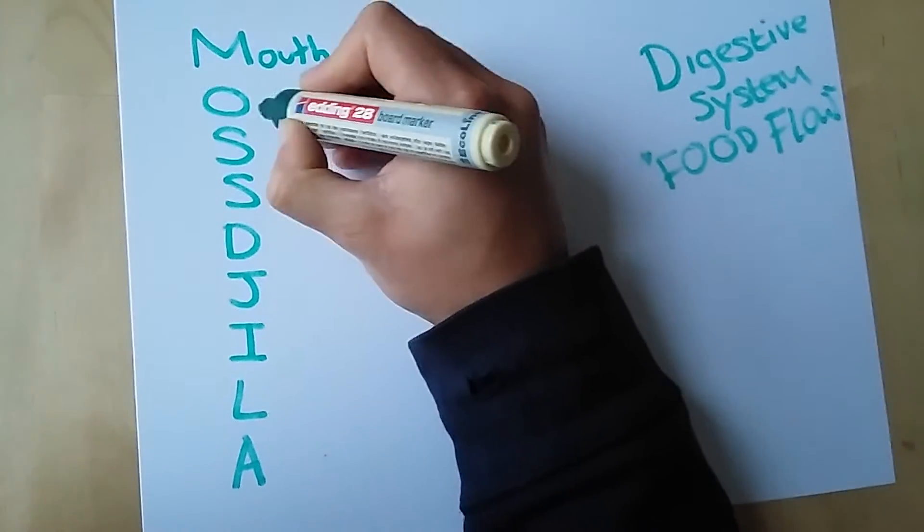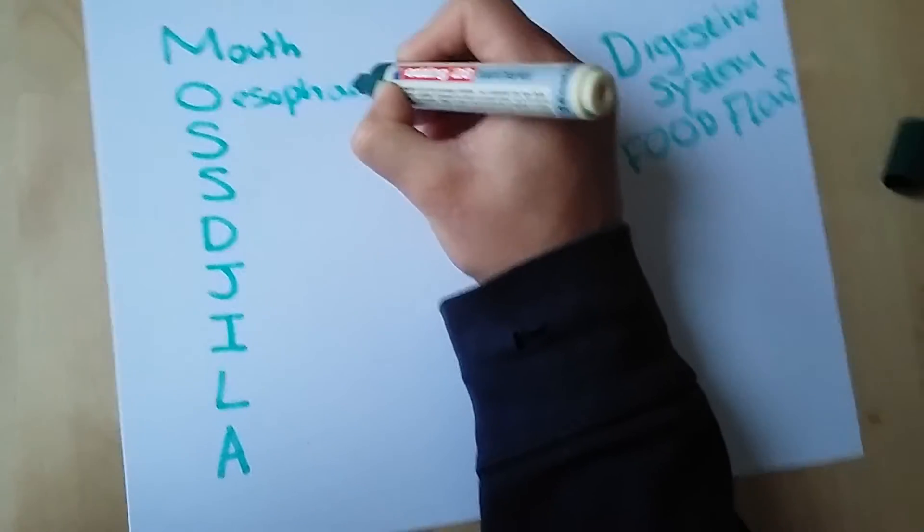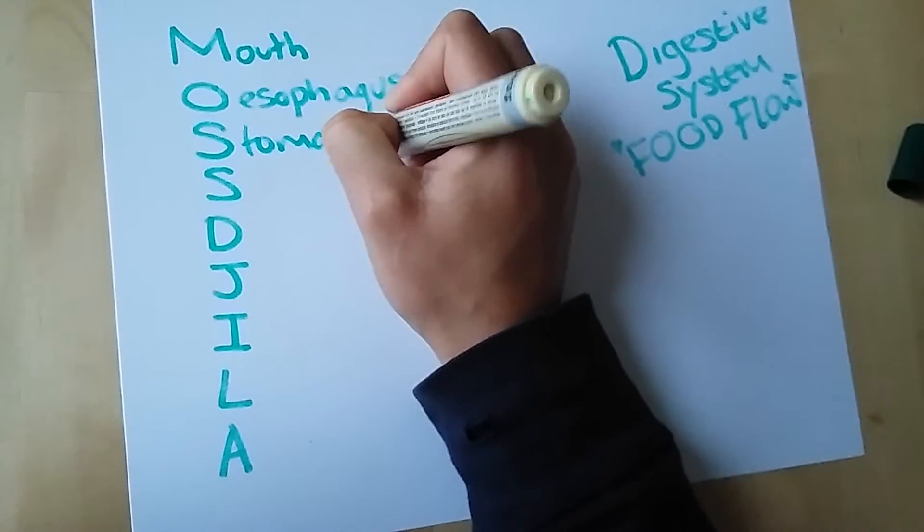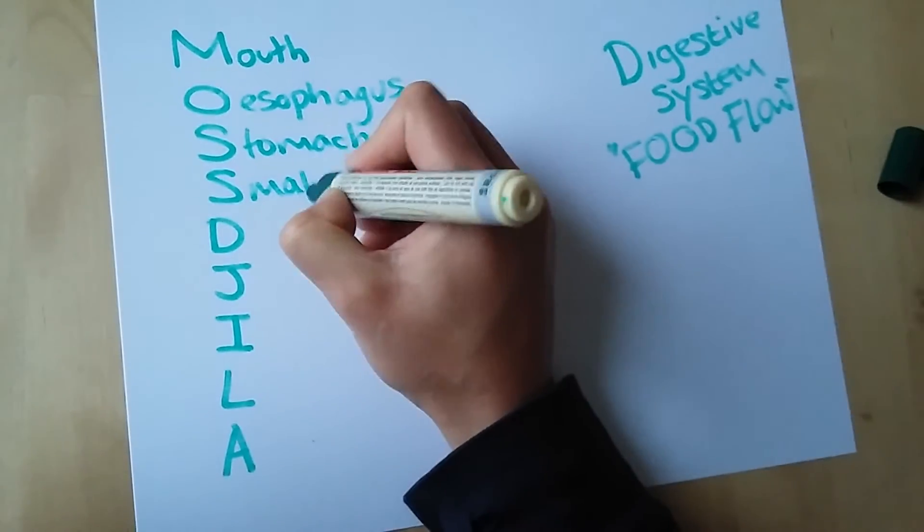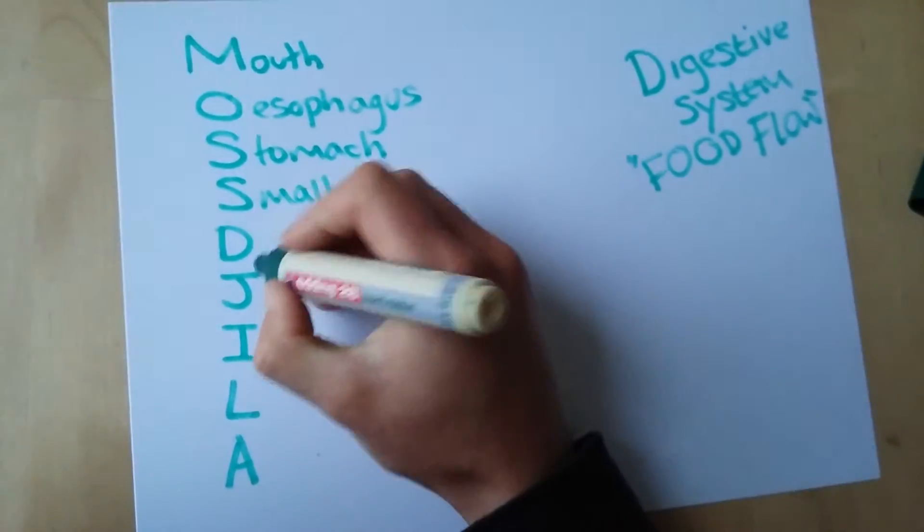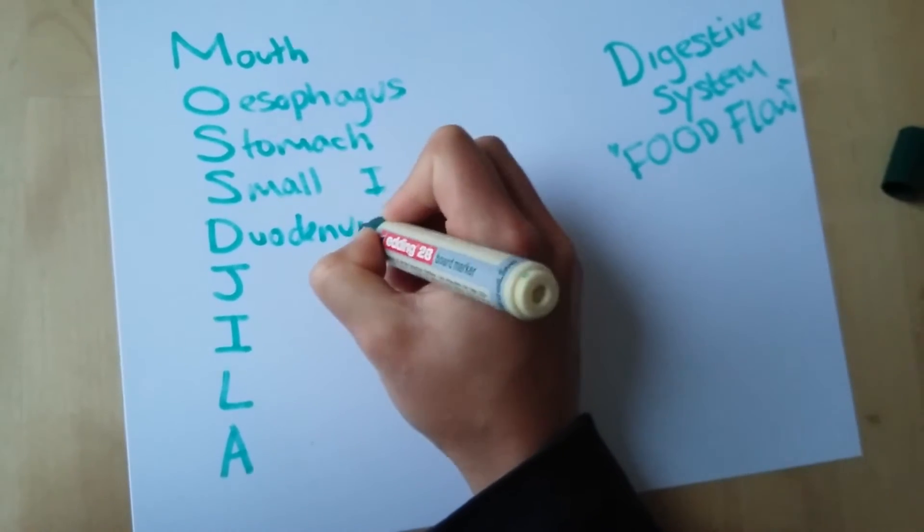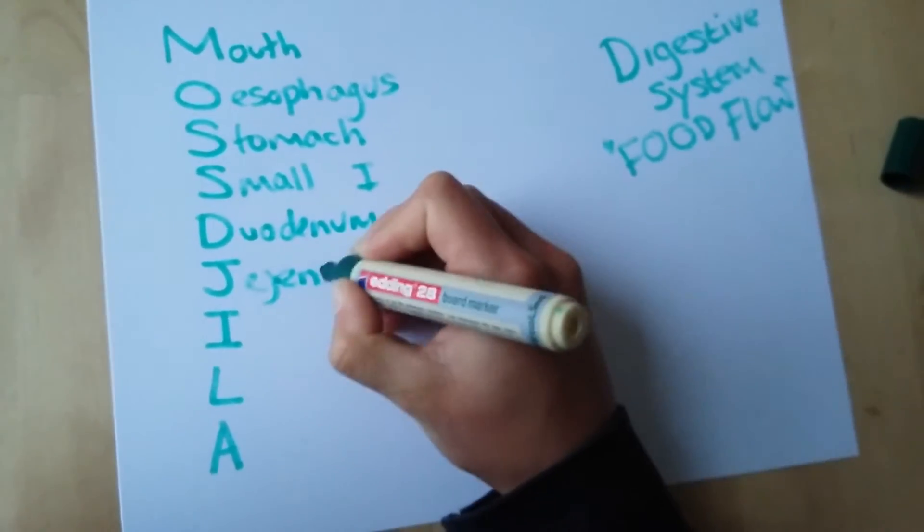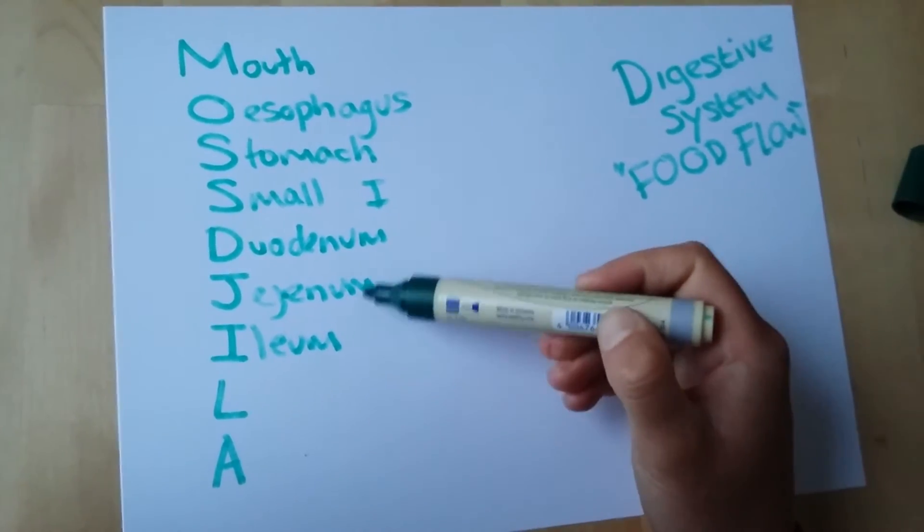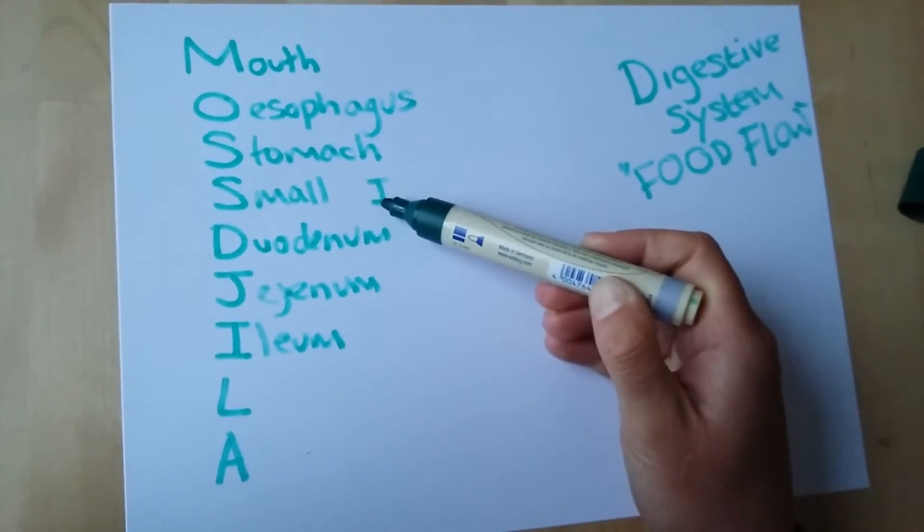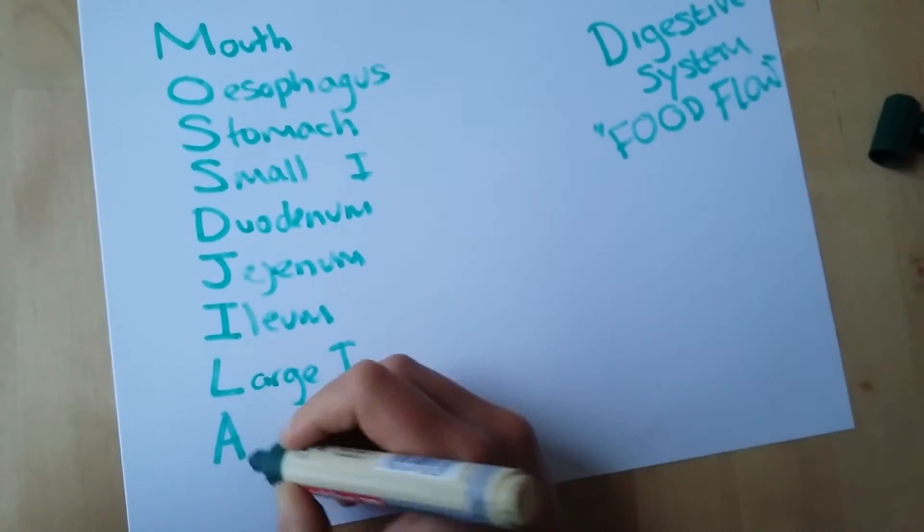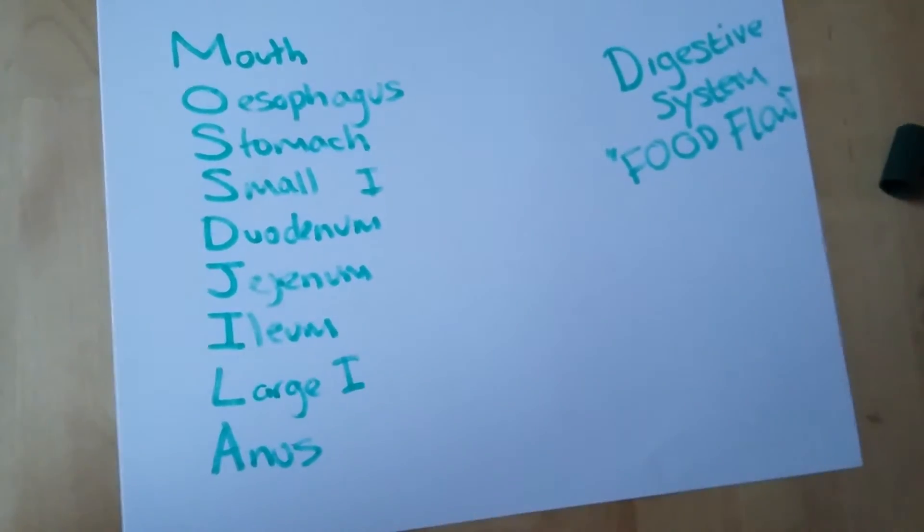Start food starting at the mouth, goes down to the esophagus, then down into the stomach, then heads into the small intestine. The small intestine is broken down into three sections: the duodenum, jejunum, and ileum. These three areas have different functions within the small intestine, so it's good to know which order they come in. Then it goes into your large intestine and evacuates via the anus.